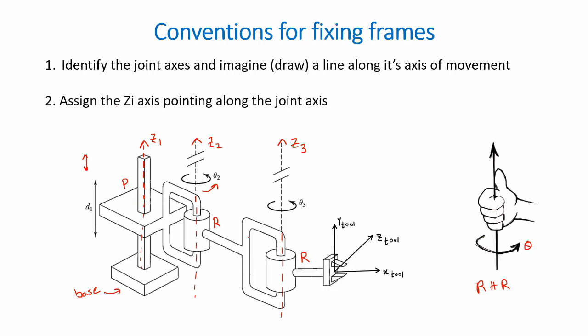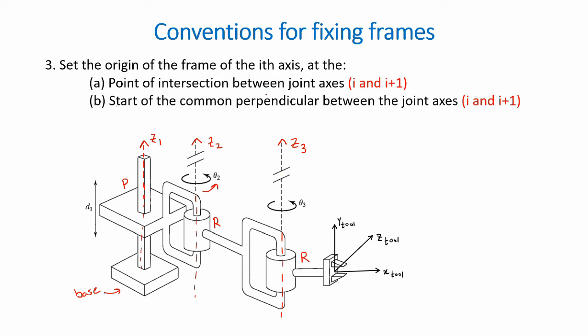We now know the direction of the three Z-axes but not yet where the origins of these frames are. The third convention shows us how to assign the origins for our three frames. We consider the i-th and the i-plus-one joint axes. There are two main methods depending on how the axes are oriented: if the axes intersect, the point of intersection denotes the origin for the first axis; if the axes are parallel, we draw a common perpendicular between them and the start of that common perpendicular denotes the origin.